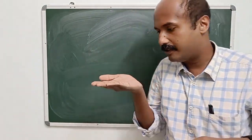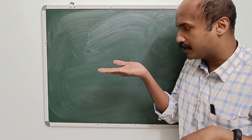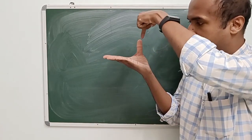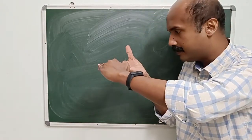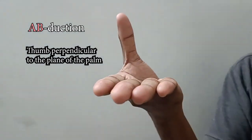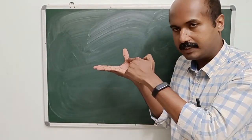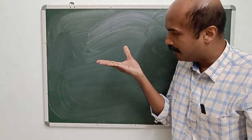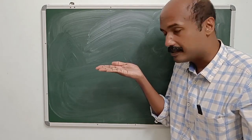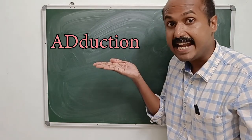For the thumb, abduction is defined like this: if this is the plane of the palm, thumb abduction is a movement in which the thumb is carried in a direction perpendicular to the plane of the palm. The axis of the thumb is now located orthogonal to the plane of the palm — this is abduction. If I bring the thumb back, that is called adduction.